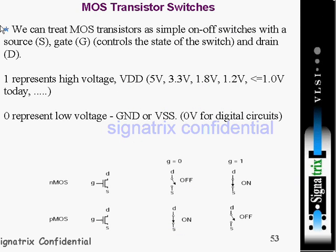MOS Transistor Switches. We can treat a MOS transistor as a simple ON-OFF switch, with the source S and gate G controlling the state of the switch and the drain D. MOS is a four-terminal device: gate, source, drain, and bulk.